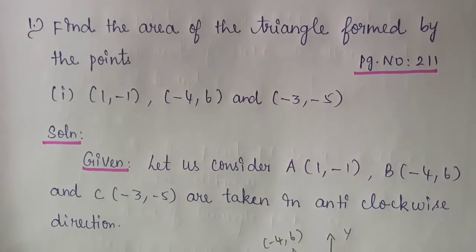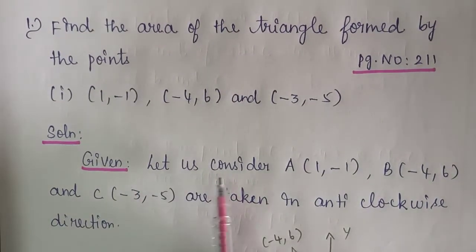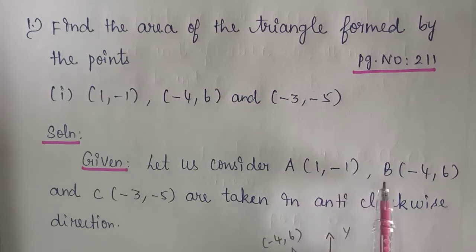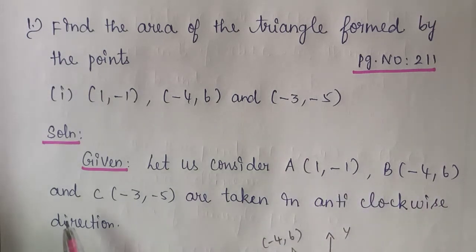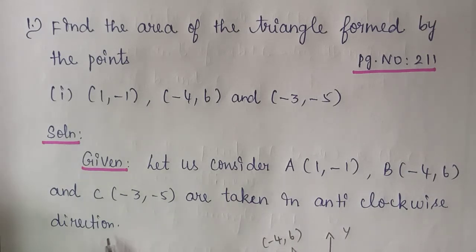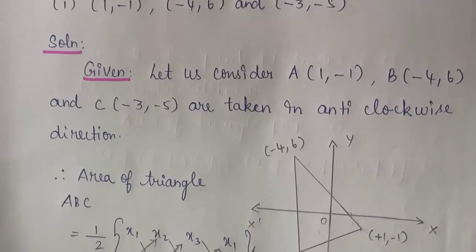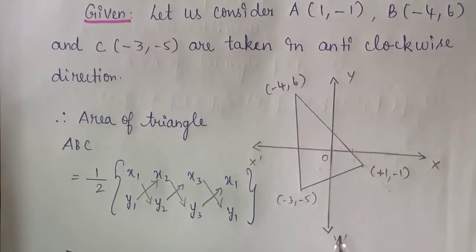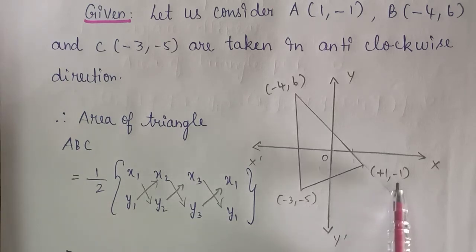Solution given. Let us consider A of (1, -1). The point (1, -1) lies on the 4th quadrant. You just draw the figure in a rough manner — this is x, y and x-dash, y-dash.